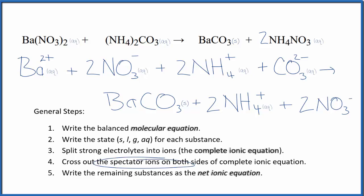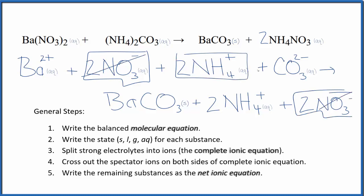Now we can cross out spectator ions. They're on both sides. So reactants on top, products on bottom. Two nitrate ions in the reactants and in the products. So these are spectator ions. We can cross these out. Two ammonium ions here in the reactants and in the products. Spectator ions, we cross them out.